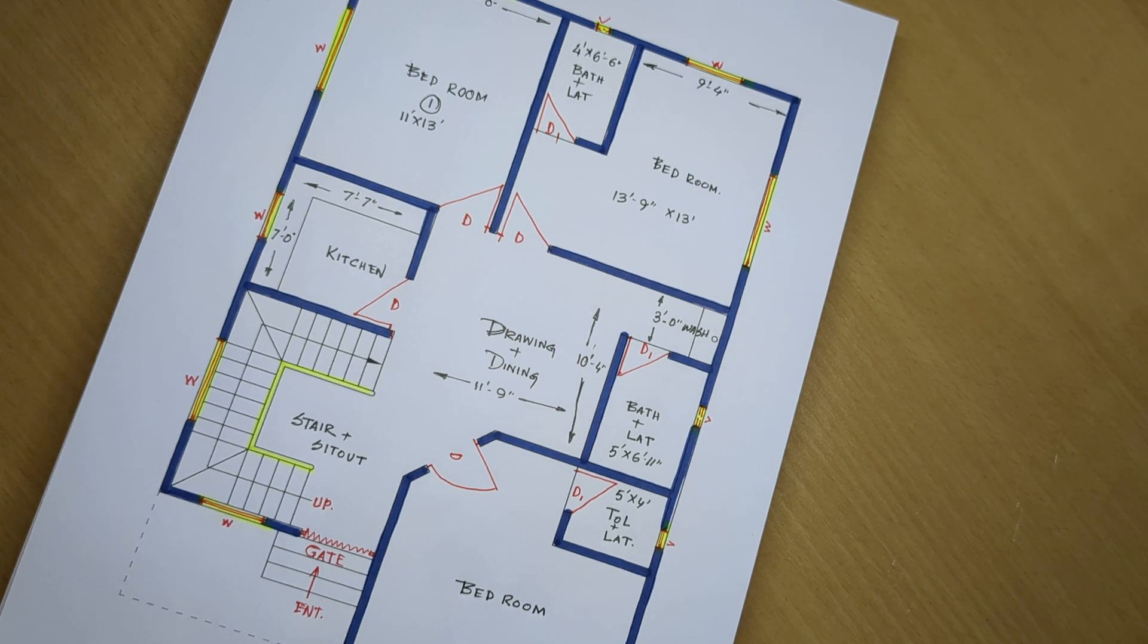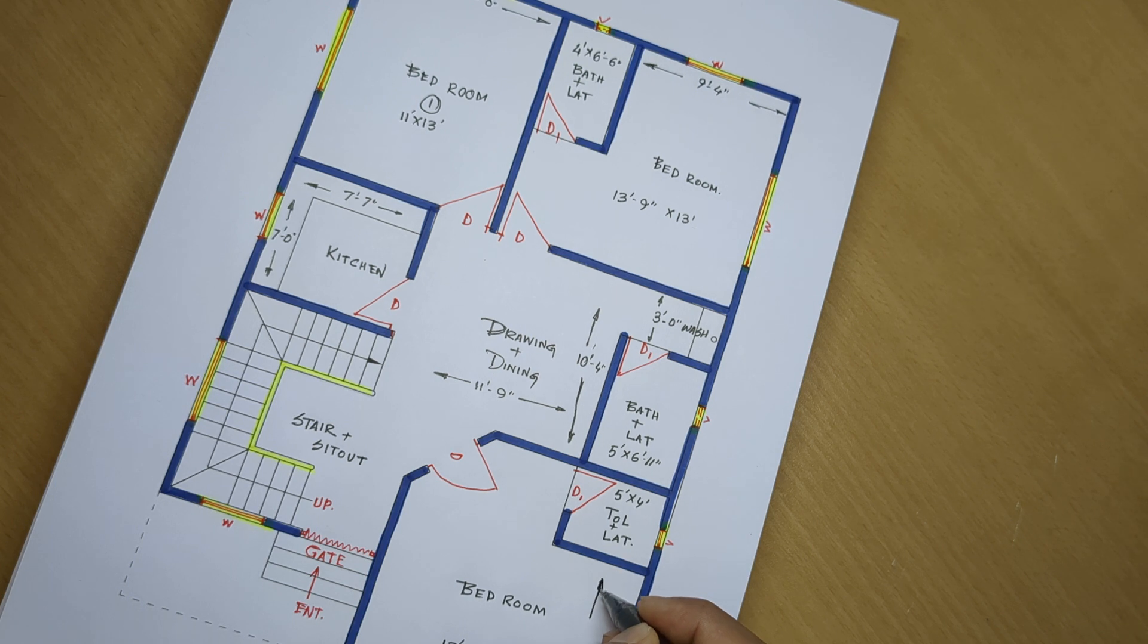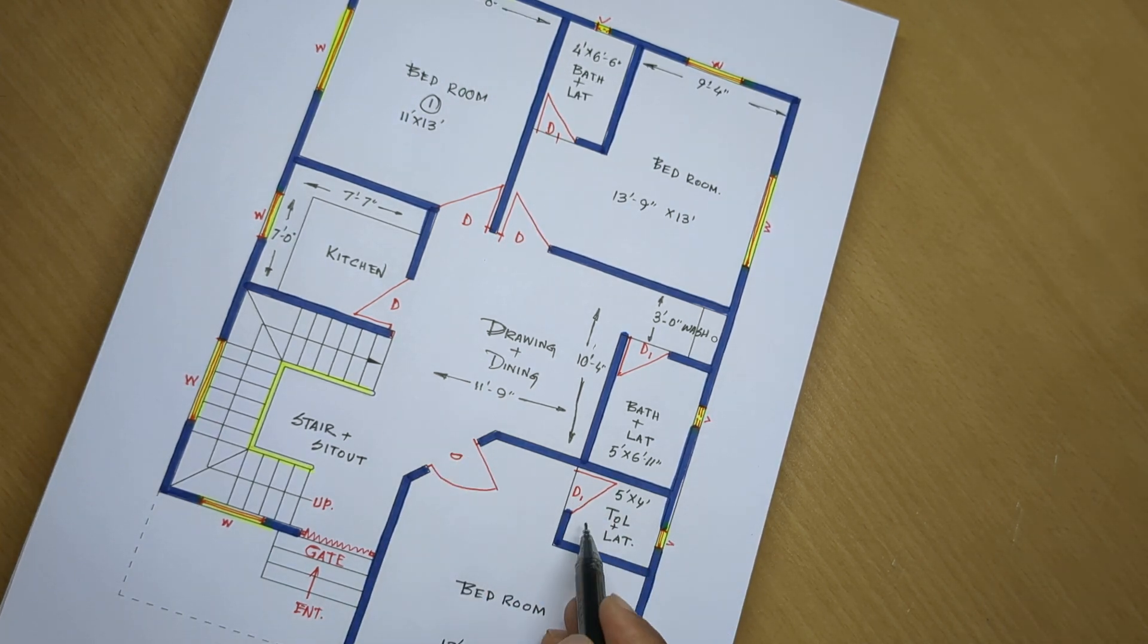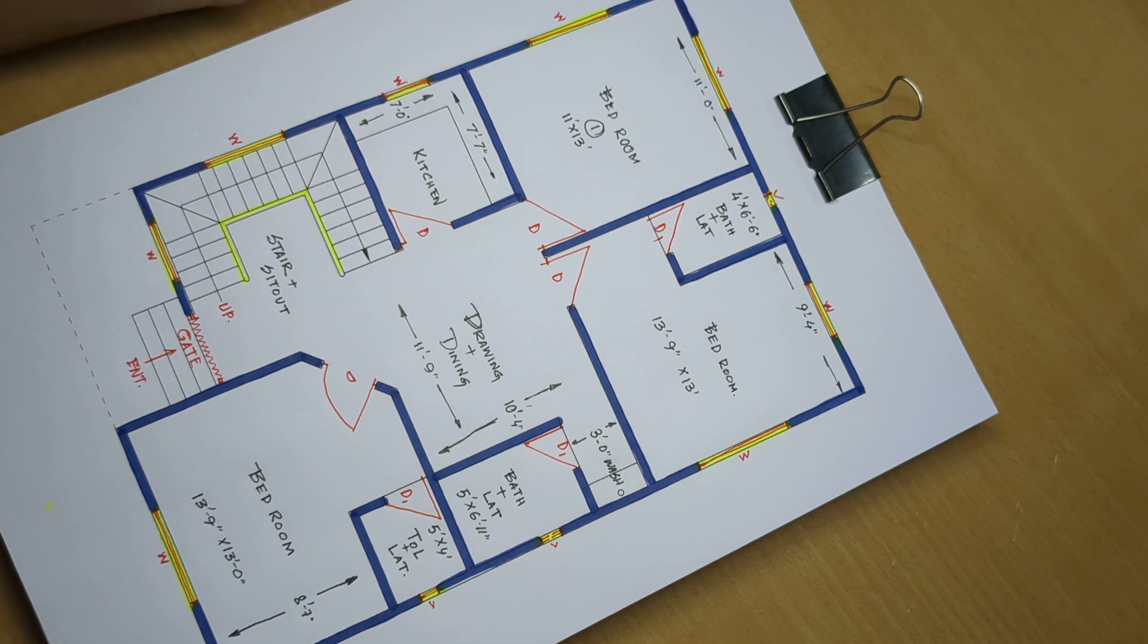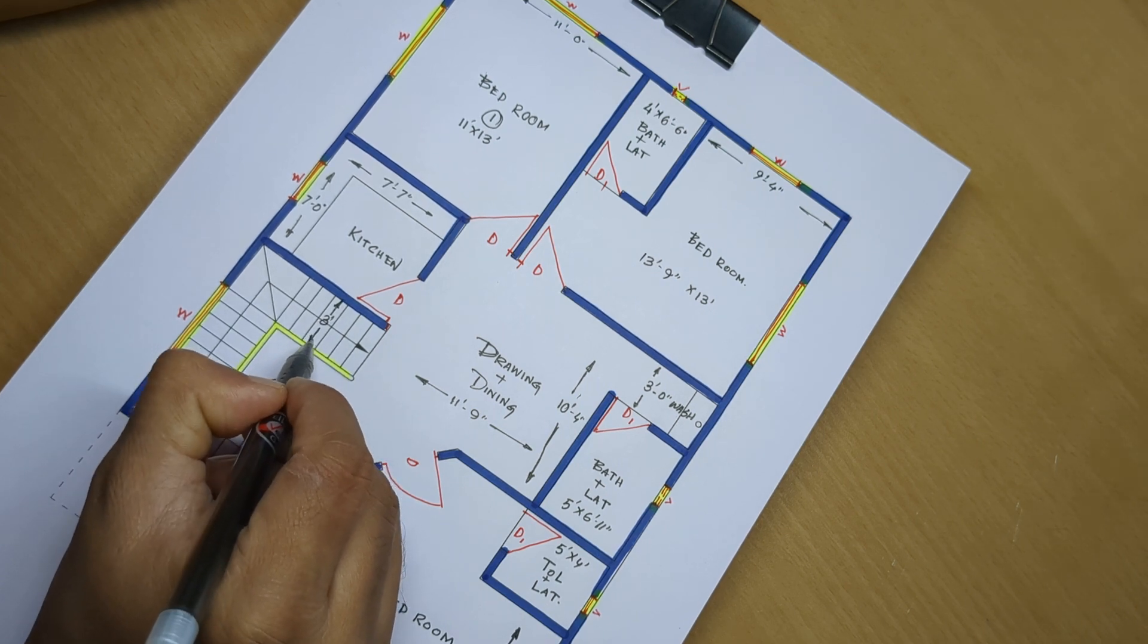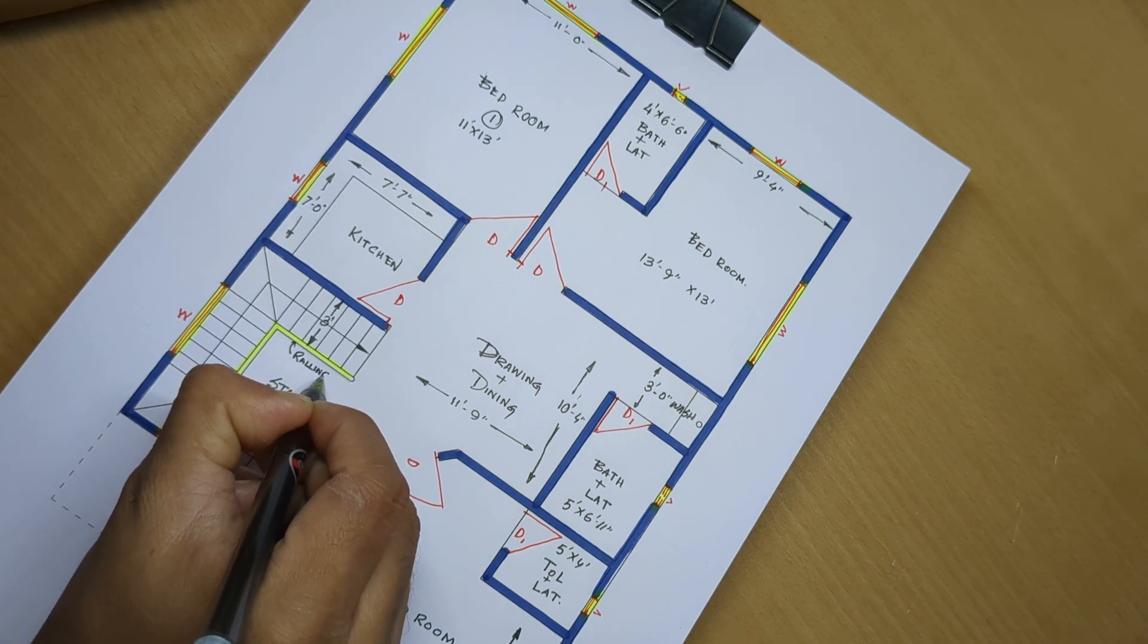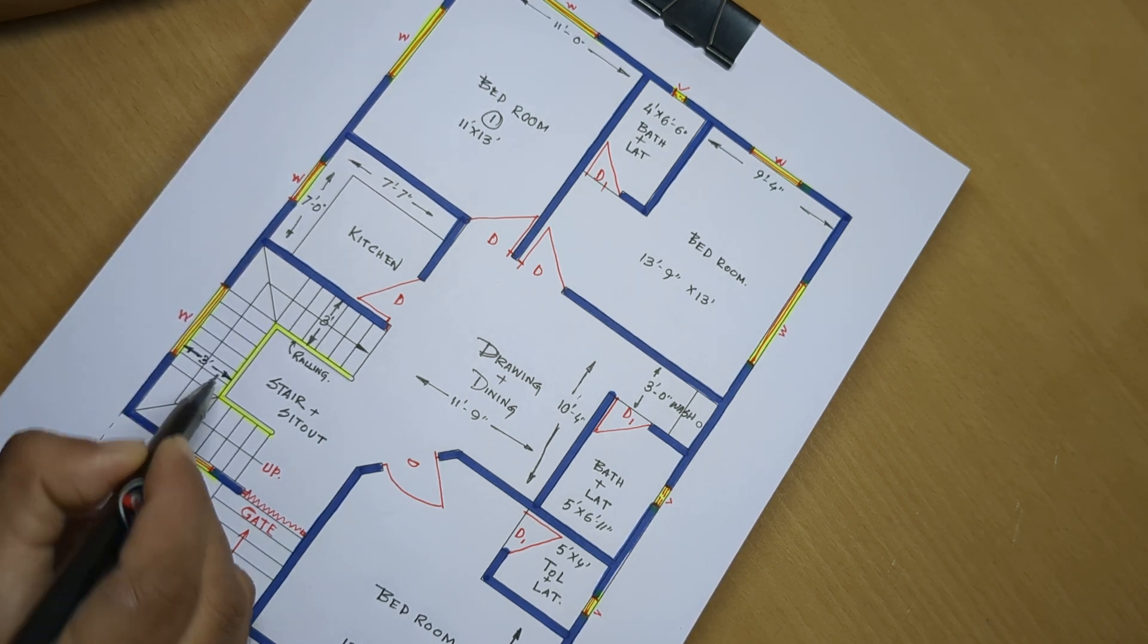Bedroom 13 feet 9 inch, 13 feet 0 inch. And 8 feet 7 inch distance side per rahega. Yaha pe sab attach toilet and bathroom. Dining room, yaha pe room kesa stair up. 3 feet, 3 feet landing, 3 feet wide.